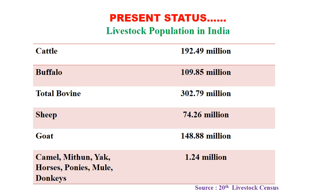Now we will discuss the present status of Indian dairy industry. First, let us understand the livestock population. Cattle stands at about 192 million, buffalo at 109 million, and together the bovine population is about 300 million — India is number 1 in cattle and buffalo population in the world. India also has sheep population around 70-75 million (number 3 in the world), goat population around 148-150 million (number 2 in the world), and other animals including camel, mithun, yak, horses, ponies, mules, and donkeys totaling around 1.24 million — according to the latest 20th Livestock Census of India.